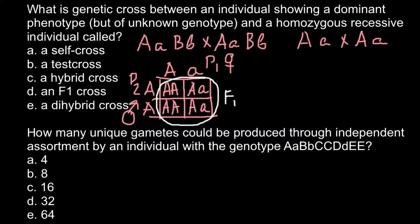So we can cross out three of the answers, and we are left with only two: a self-cross and a test cross. A self-cross means we take pollen from the same plant and self-pollinate it. Such a plant must be monoecious — it must have both male and female reproductive structures so it can self-pollinate. So that is not the correct answer here.